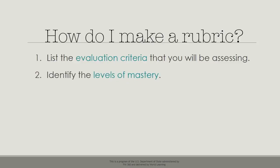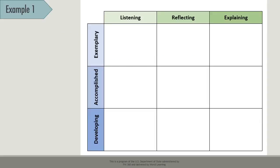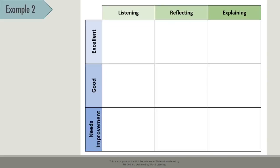Next, decide how you will rate these criteria — you will need to identify the levels of mastery. If you want three levels, you can label them. In this first example, the levels of mastery are developing, accomplished, and exemplary. This example uses needs improvement, good, and excellent as levels of mastery. These words are a little bit simpler and perhaps better suited for younger learners or beginners.